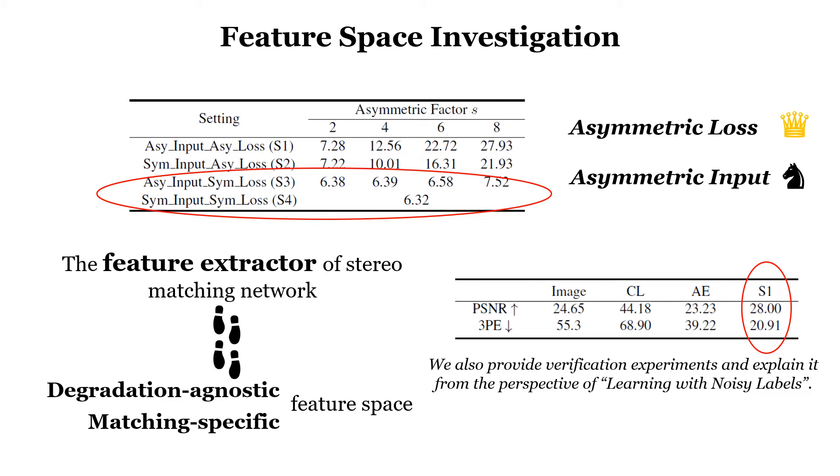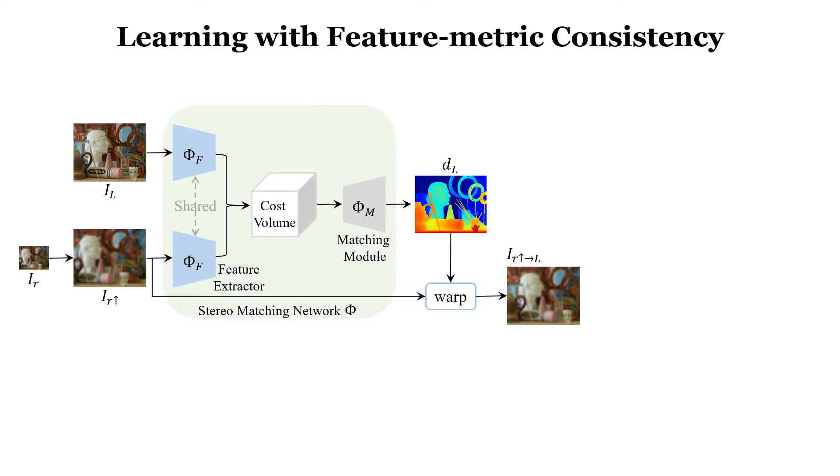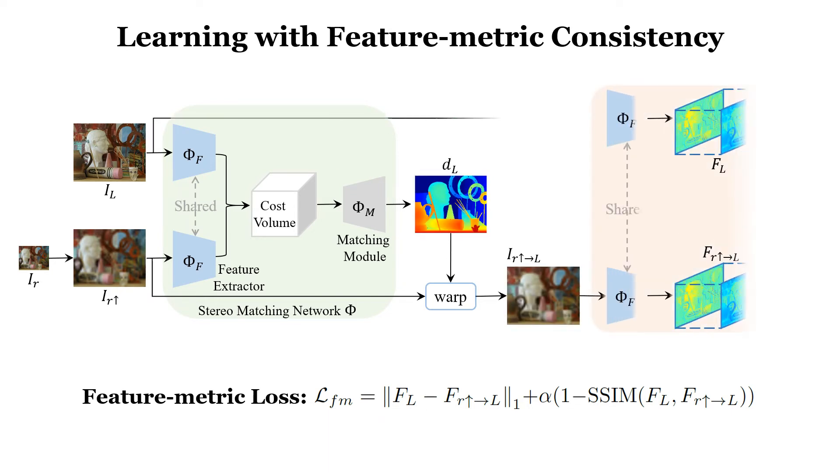With the feature extractor, we compute a feature metric loss to optimize the network. Specifically, after obtaining the warped left view with disparity, the feature extractor is used to project the original and warped left view images to the feature space, producing features FL and warped FL.